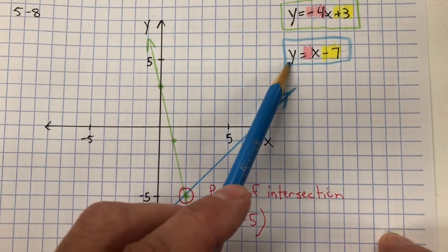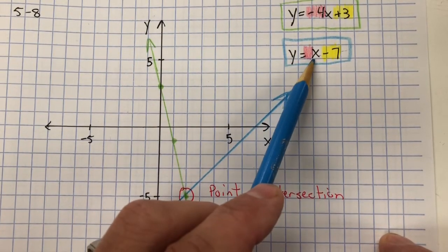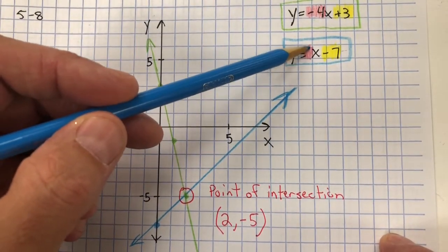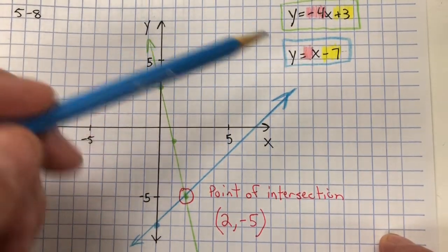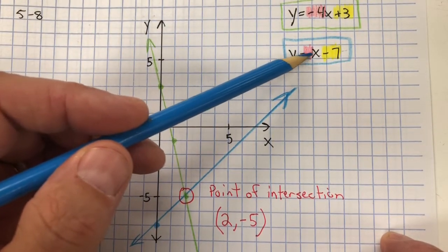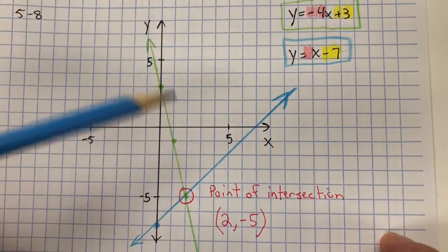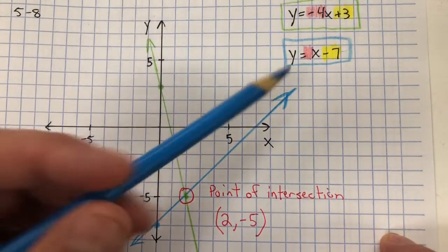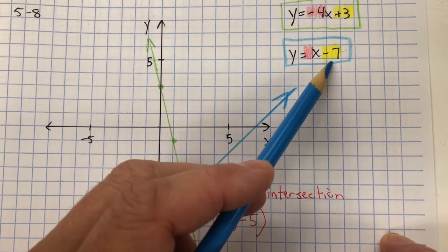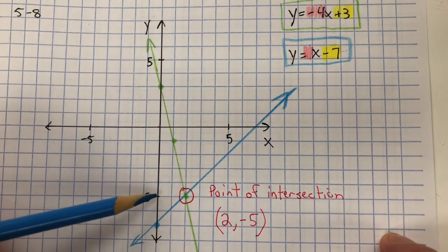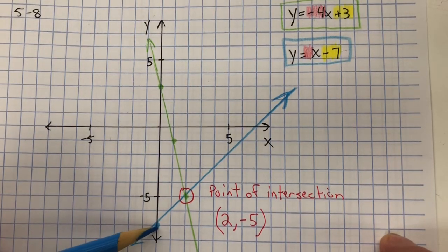For the second equation, I have Y equals X minus 7. Well, I could place a 1 in here, because 1 multiplied by X is the identity property of multiplication. So 1 could be written as 1 over 1. And my Y-intercept is negative 7: negative 1, 2, 3, 4, 5, 6, 7.